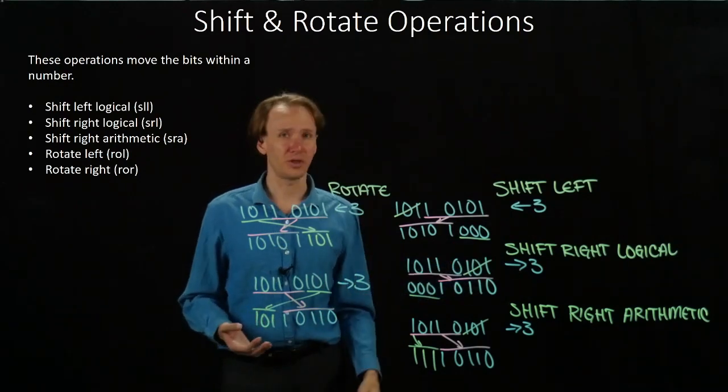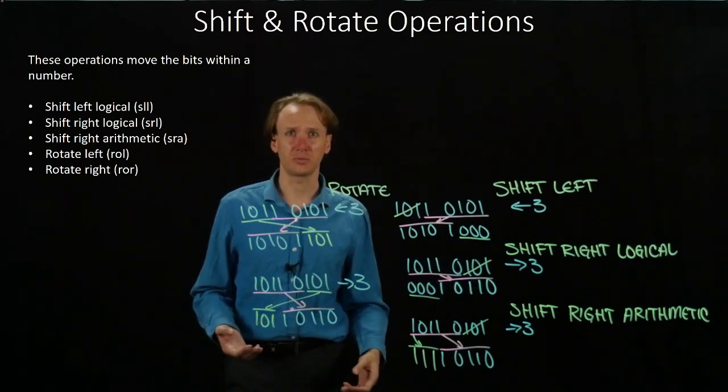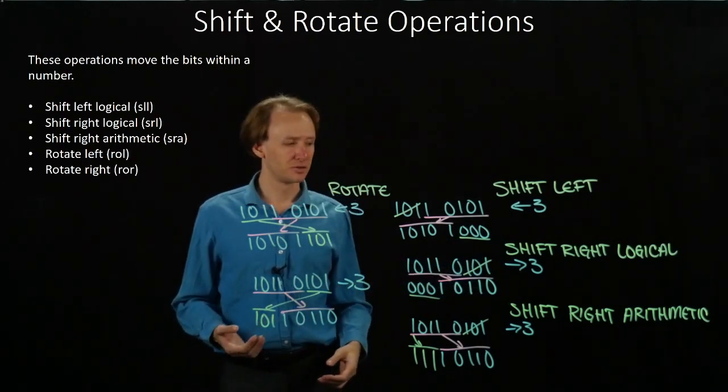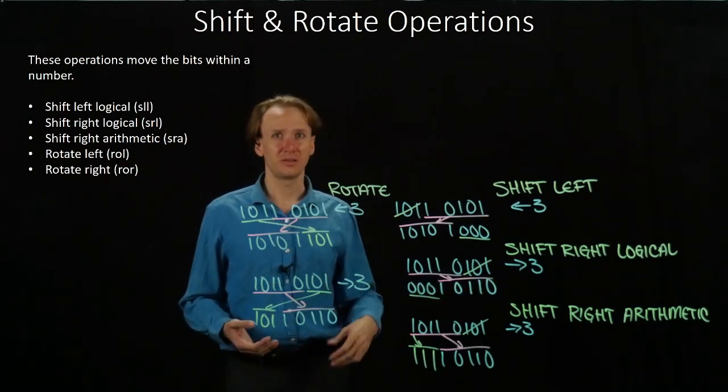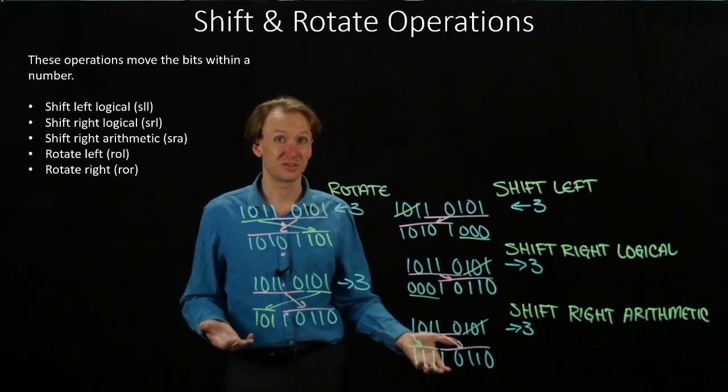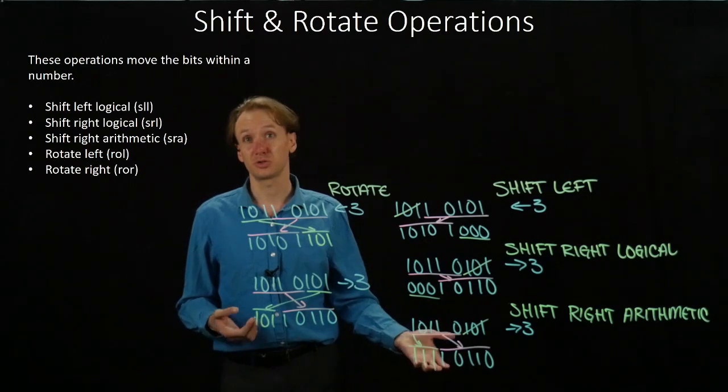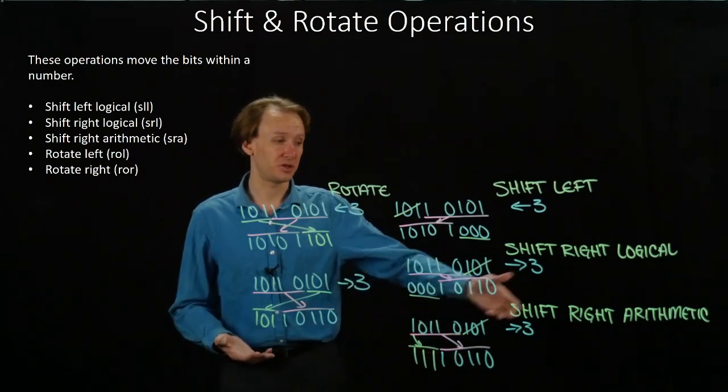For your shift right arithmetic, well, that won't change anything. All of your number, for your shift right arithmetic, that won't change anything. You'll either have all zeros or all ones, even just shifting 31 places.